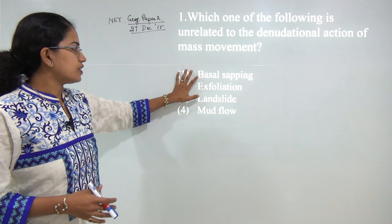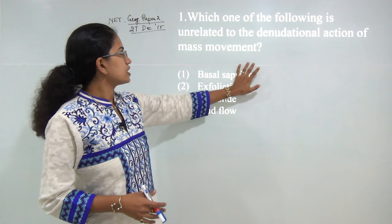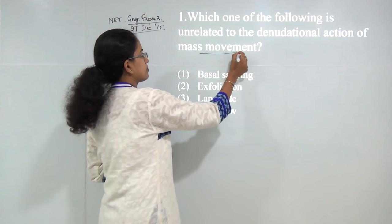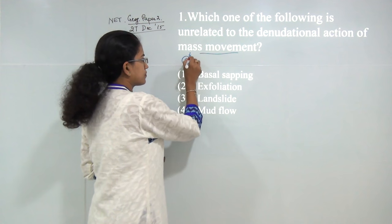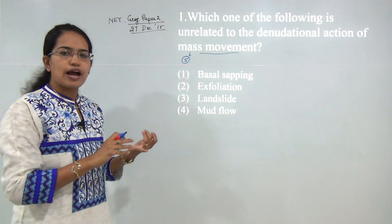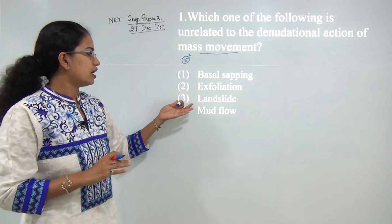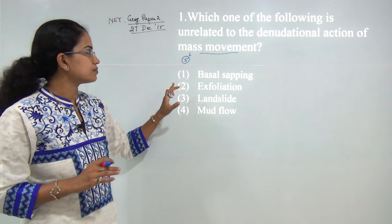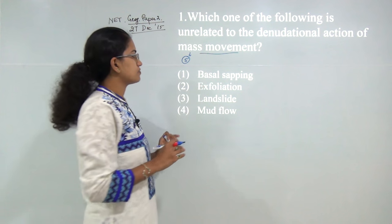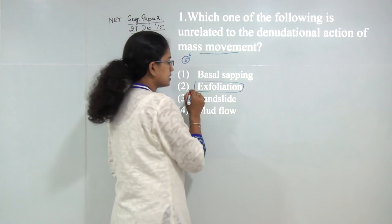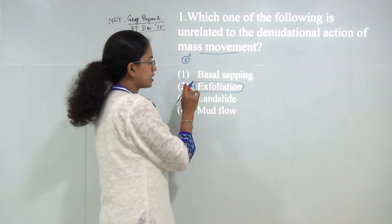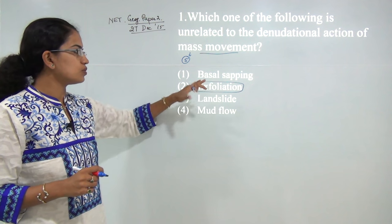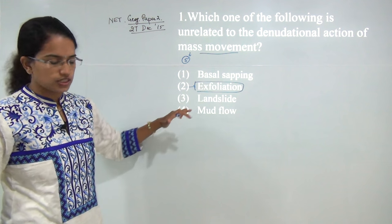The first question: which of the following is unrelated to denudational action of mass movement? When we talk about mass movement we include 5 types: creep, slumping, landslide, mudflow, and rockfalls. Exfoliation is considered a process of weathering and is unrelated to mass movement. So the answer here would be exfoliation.